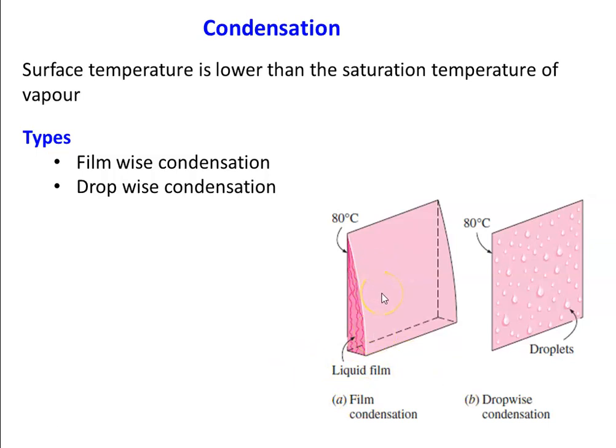In film-based condensation, there is always a layer of liquid present. Heat is transferred between the vapor and the surface through this liquid layer, which offers some resistance, so the amount of heat transfer and condensate is less. It is very difficult to maintain drop-based condensation. All heat exchangers and condensers are designed only for the film-based condensation method.